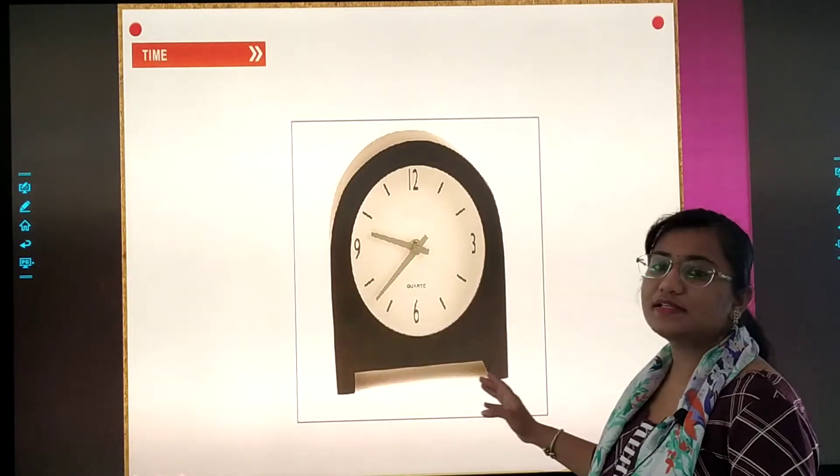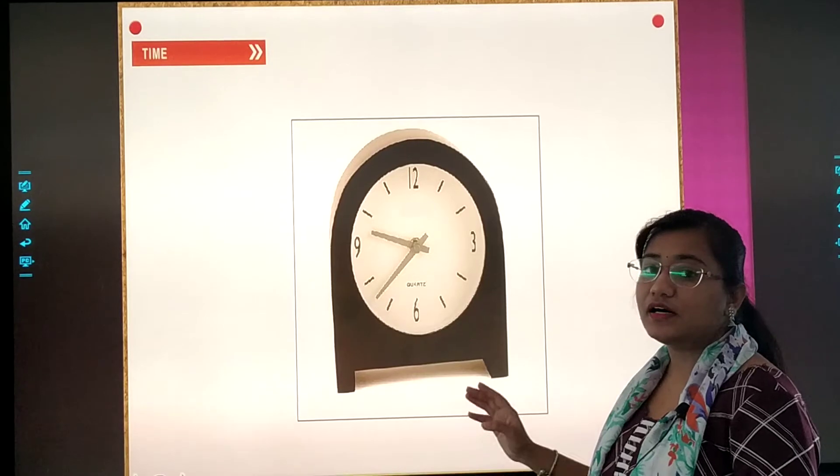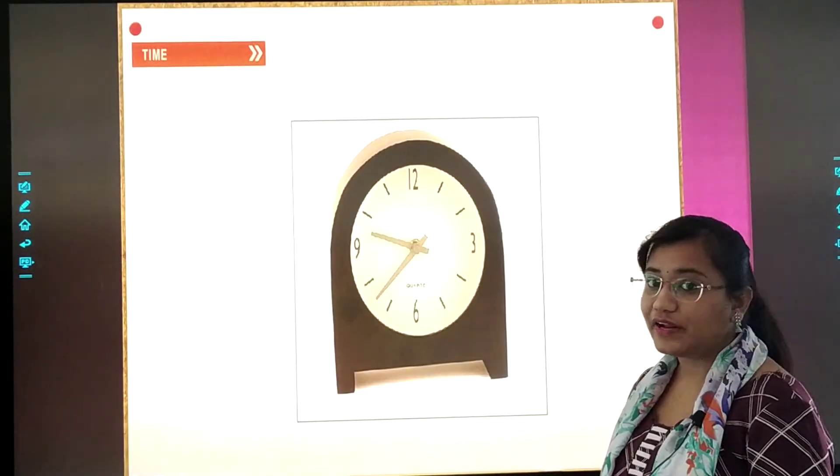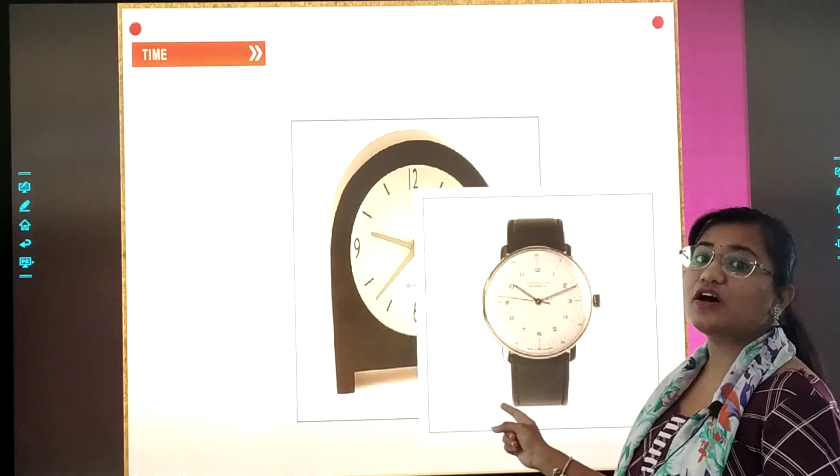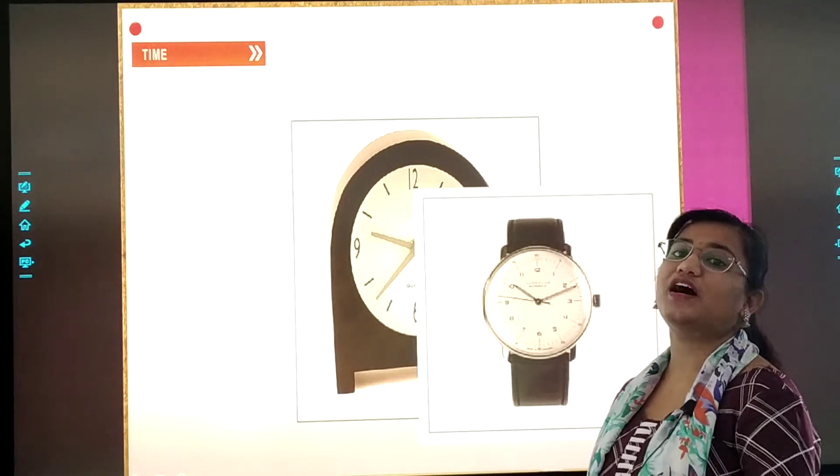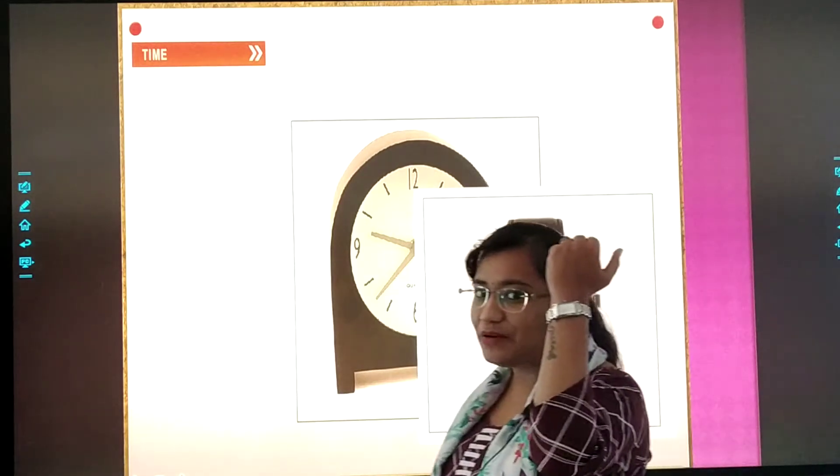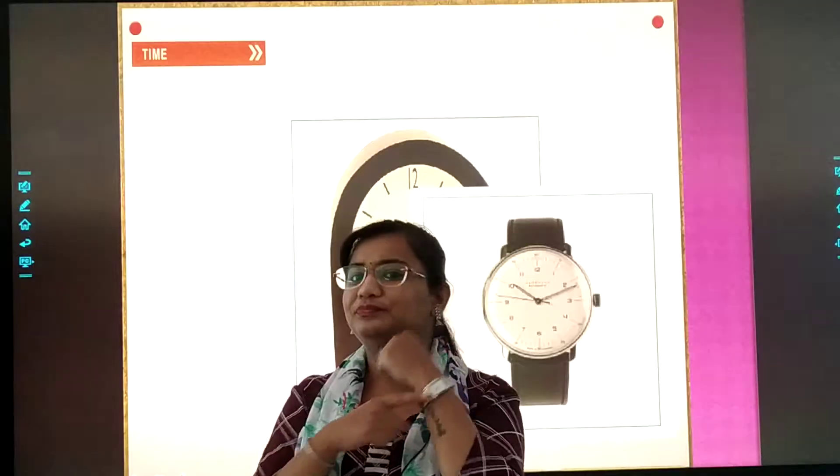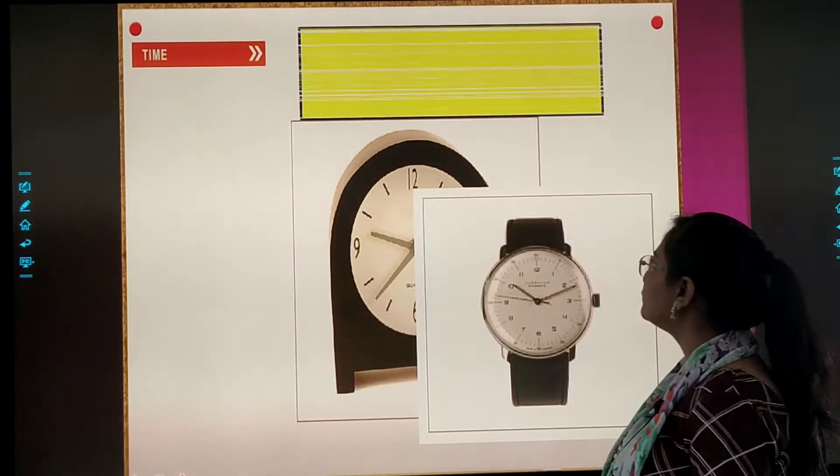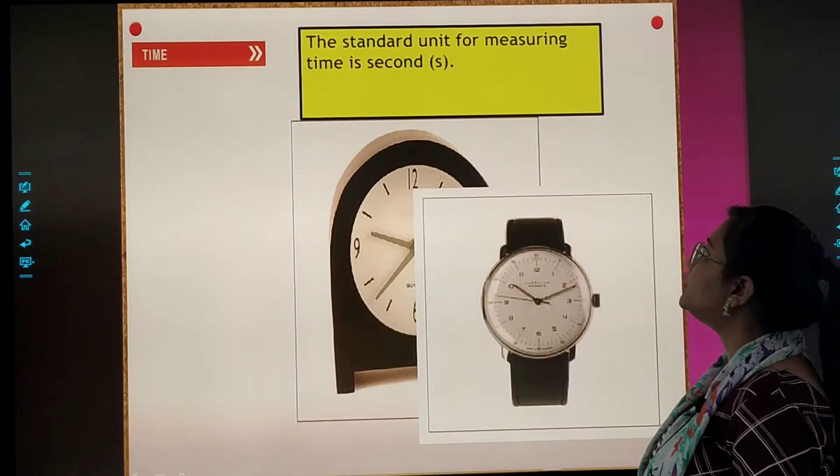Time. What is this? It's a clock. Right? And this? It's a wrist watch. Jo hum apne left hand me pehnte hain. What is the time? Clock mein dekho, watch pe dekho. So now we will see.